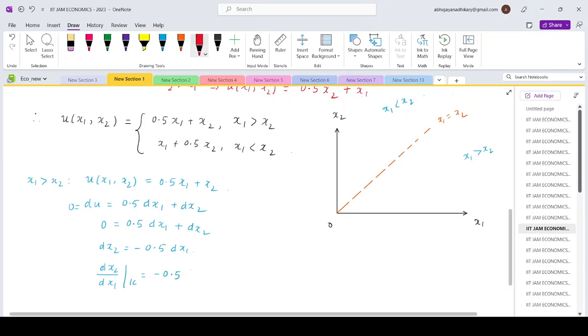So in the lower part we will have a straight line whose slope is 0.5. So in this part the absolute slope is 0.5.